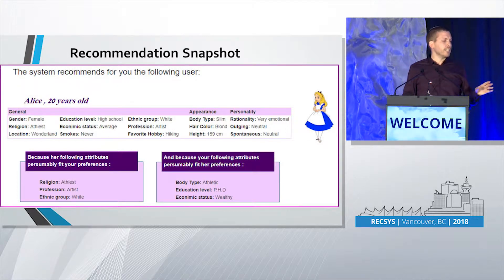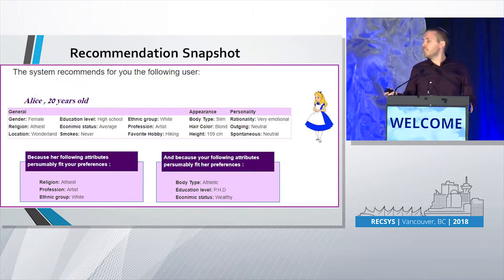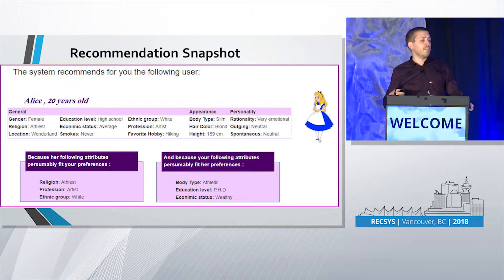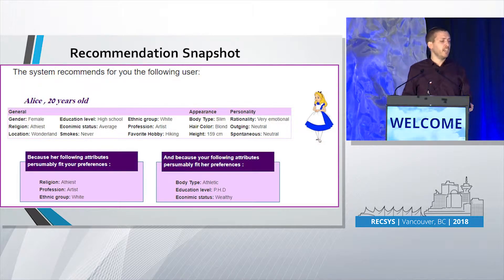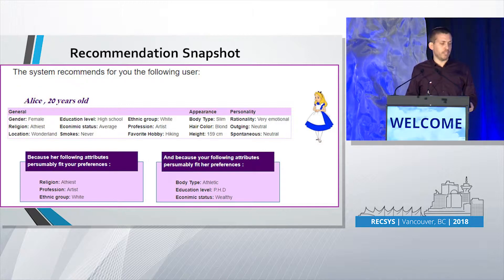Here is just a snapshot from our system. As you can see, the system recommends Alice to the participant, and it has a reciprocal explanation because it also includes reasoning for why Alice would be interested in the participant.